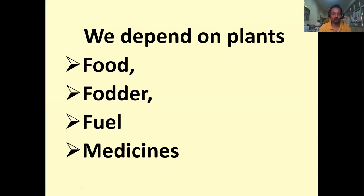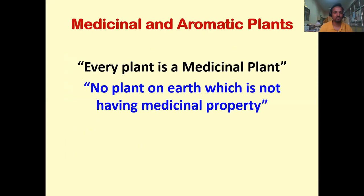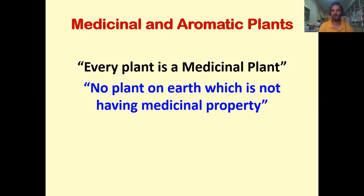We all depend on plants for food, fodder, fuel and medicines. Plants play an important role in ensuring all these needs. Medicinal plants are the source of raw drugs used in various systems of medicine. Every plant has a medicinal value — even rice has medicinal properties apart from its use as food. I can say that there is no plant on earth which does not have medicinal property, and medicinal aromatic plants play an important role in ensuring the health security of the country.